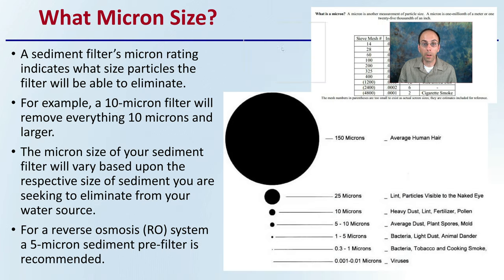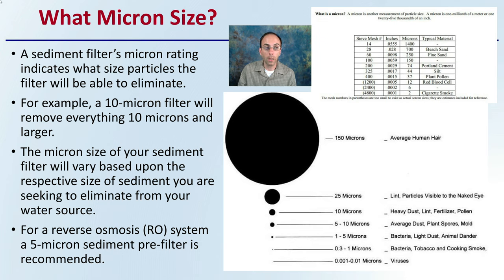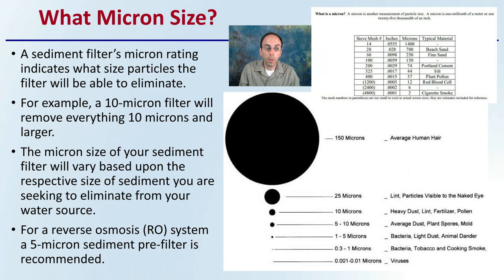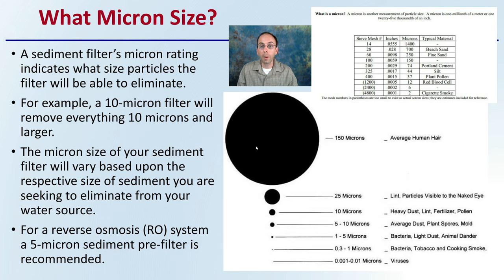Let's talk about micron size. A sediment filter's micron rating indicates what size particles the filter will be able to eliminate. For example, a 10-micron filter will remove anything 10 microns and larger. The micron size of your filter will vary based upon the size of the sediment you're seeking to eliminate. For a reverse osmosis system, a 5-micron sediment pre-filter is typically recommended. A comparison chart shows the relative size of microns compared to the average human hair, which is about 150 microns, illustrating the typical materials being removed.